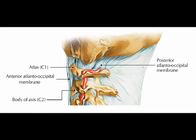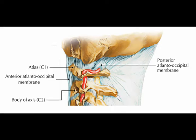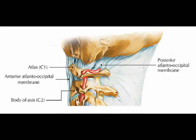C1 is known as the atlas. It does not have a spinous process. It articulates with the occipital condyle, so the occiput, forming the occipital atlantal joint, and it connects the skull to the neck.